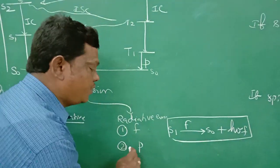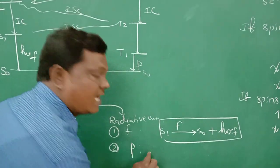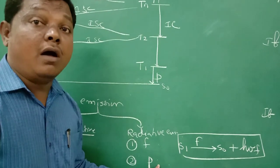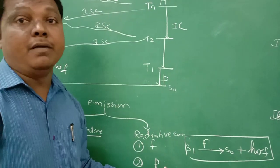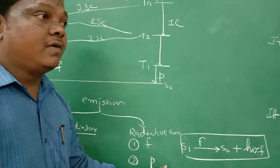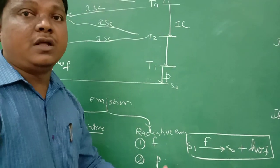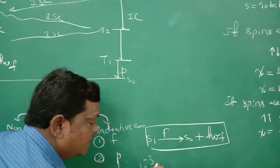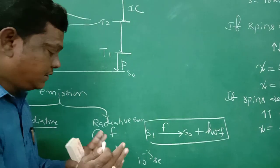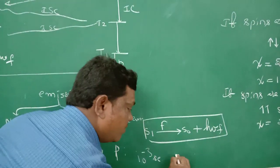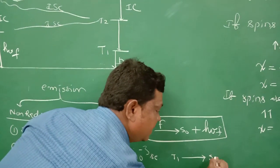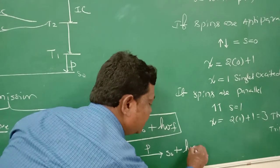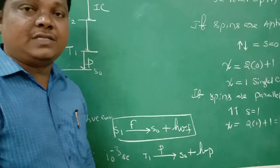Phosphorescence is a slow radiative emission. It is a spectroscopically forbidden process but it occurs due to spin conversion, and it requires a time on the order of 10 to the power of minus 3 seconds. Phosphorescence involves the electronic transition from T1 to S0, with emission of radiation. Thanks for watching.